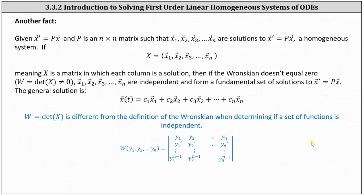One fact not mentioned in our textbook is that given x prime equals p times x, and p is an n by n matrix, such that x1 through xn are solutions to the differential equation — which is a homogeneous system — if x is a matrix in which each column is a solution, then if the Wronskian doesn't equal zero, where the Wronskian is equal to the determinant of matrix x, then x1 through xn are independent and form a fundamental set of solutions, and the general solution can be expressed using the equation below. Here we're defining the Wronskian as the determinant of matrix x where the columns are the solutions. This is different from the definition of the Wronskian used earlier in the course when determining if a set of functions is independent.